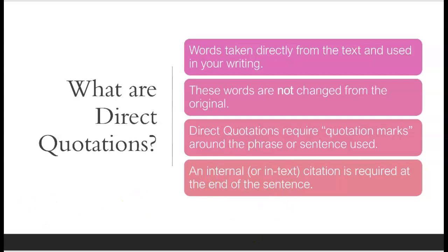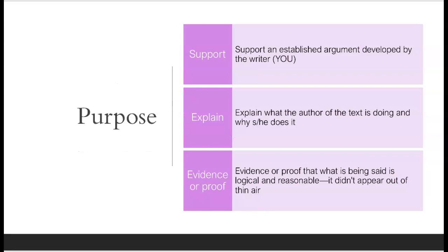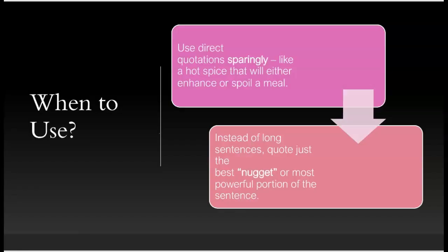Why do we use direct quotations? They are used to support an established argument developed by you, the writer. They help explain what the author of the text is doing and why. They also provide evidence or proof that what's being said is both logical and reasonable — in other words, you're not making stuff up. When you use direct quotations, you're showing your reader where you got it from.